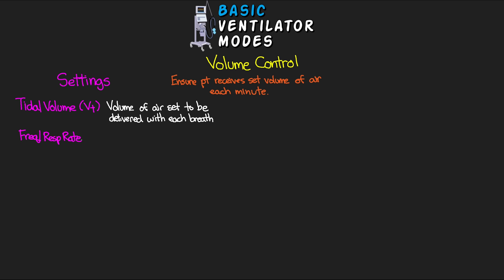The next setting is frequency, also known as respiratory rate, abbreviated as F or RR. It's how many breaths per minute are being delivered to our patient. The way this triggers is the vent takes the respiratory rate you set, divides it into 60 to figure out the amount of time between each breath, and when that amount of time has elapsed it triggers another breath to be given.